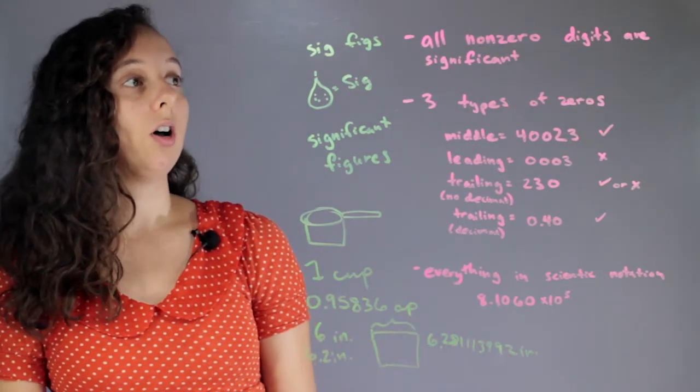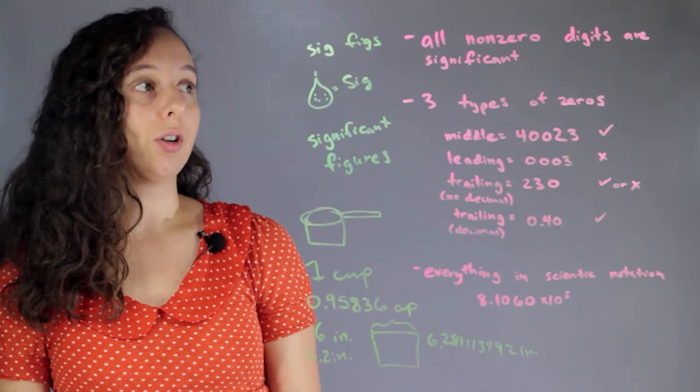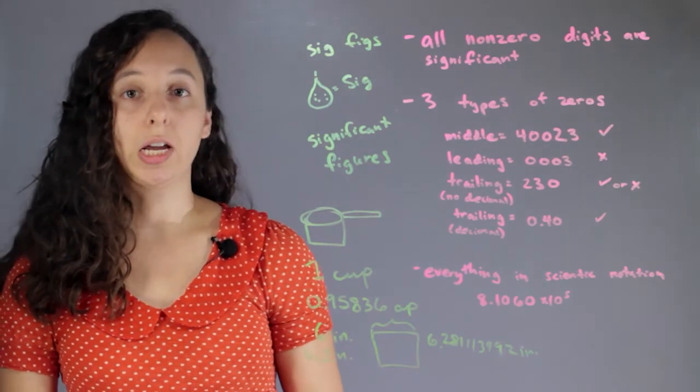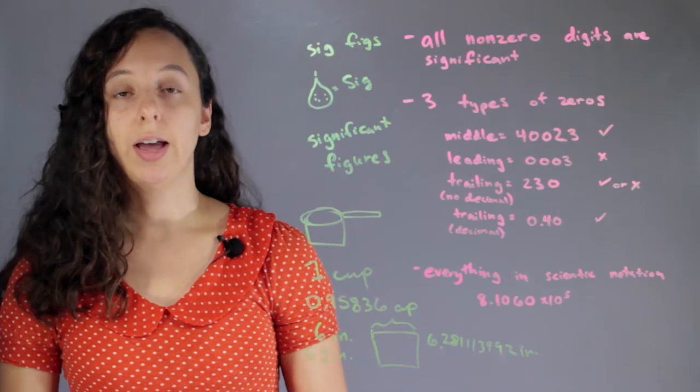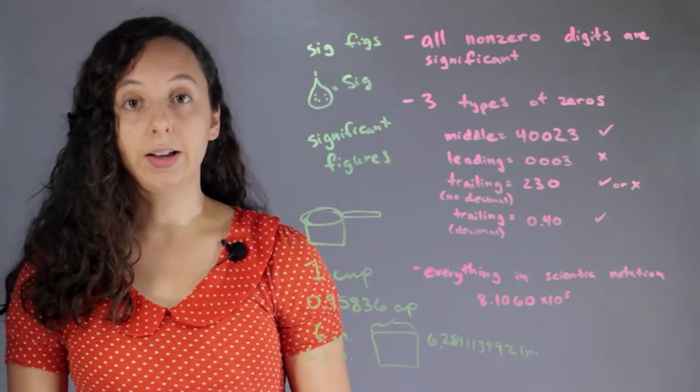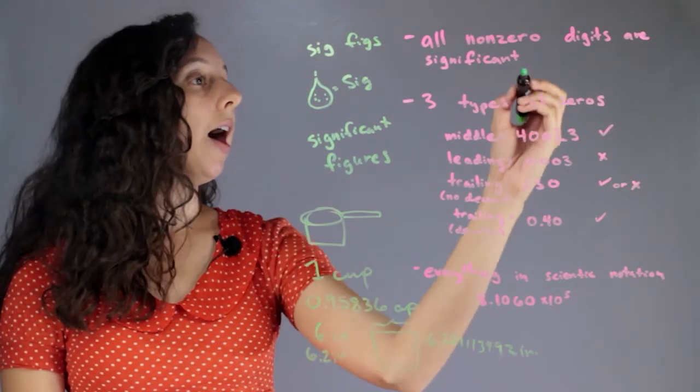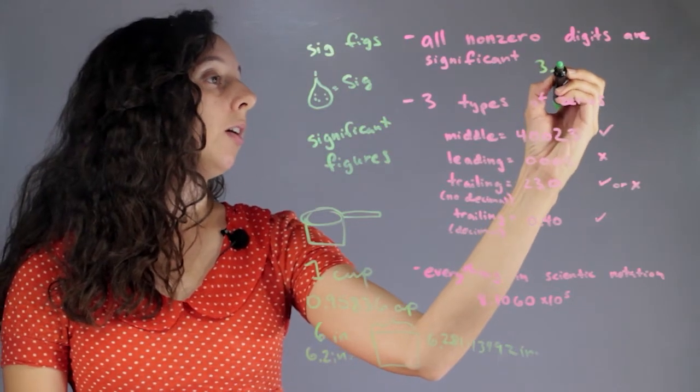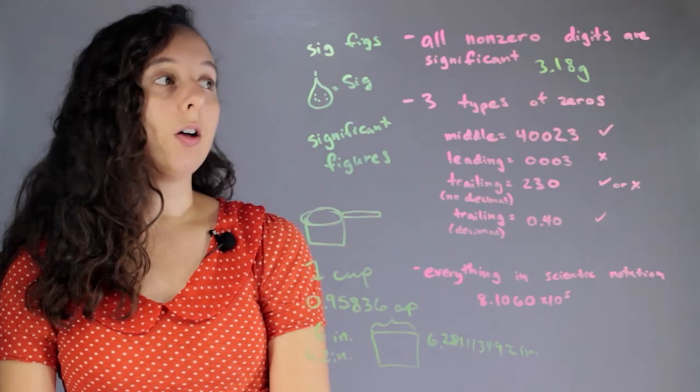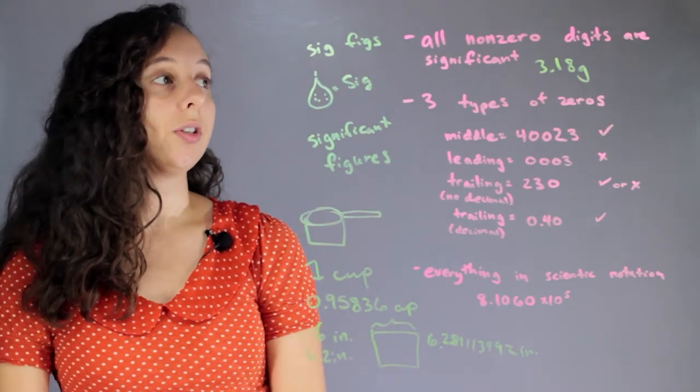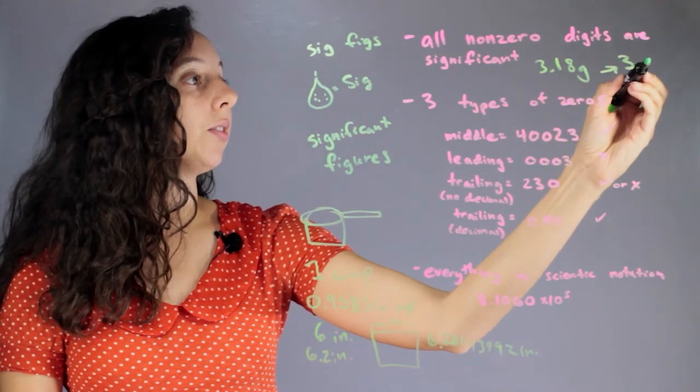So first of all, all non-zero digits are significant. Now this has changed from you measuring something to you reading a number that someone gives you and figuring out how many sig figs it has. So if someone says that I have 3.18 grams of something, all of those are non-zeros. So this is going to be 3 sig figs.